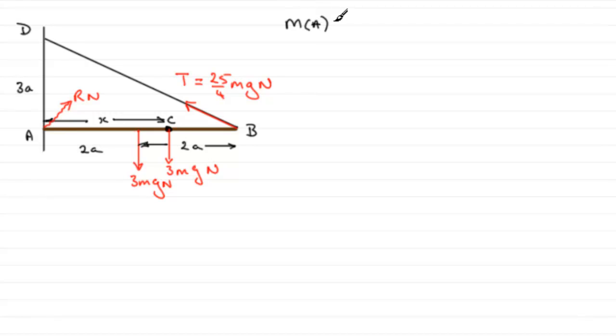I'm going to take moments about A, taking clockwise as positive. Let's start with the weight acting at C: 3mg. Its moment is that force times the distance back to A, which is x, so you've got 3mgx. Now we've got the weight of the uniform rod, again 3mg. It wants to turn it about A in a clockwise sense, so that's plus 3mg times the distance 2a.